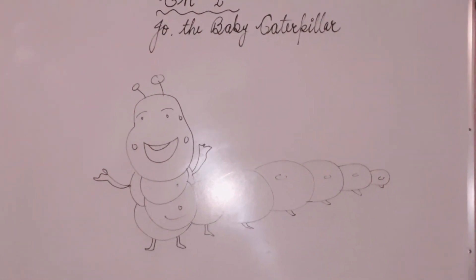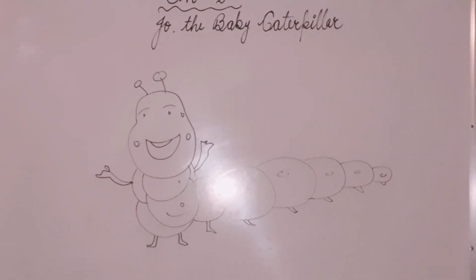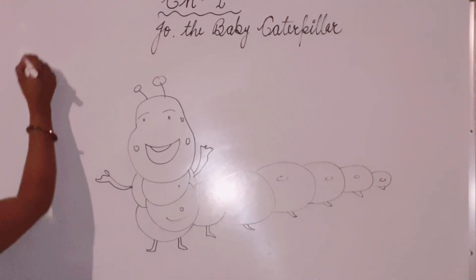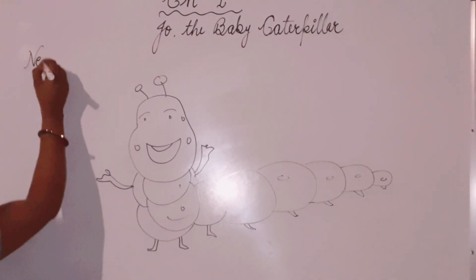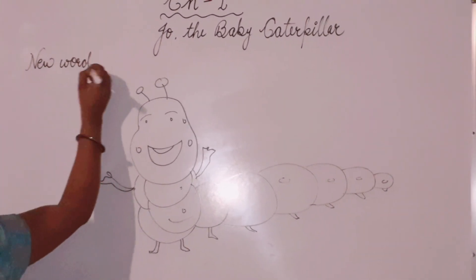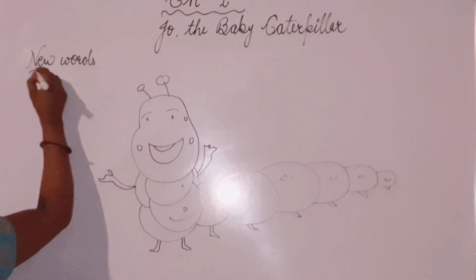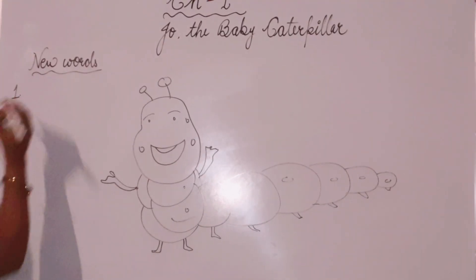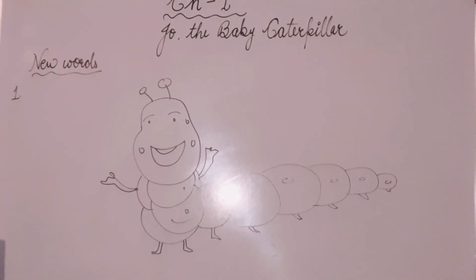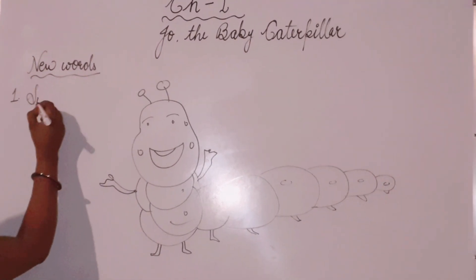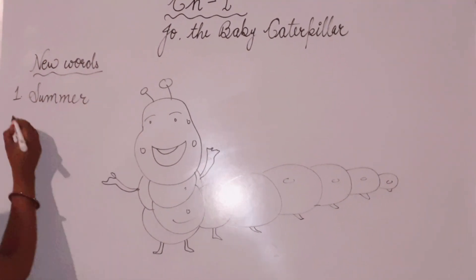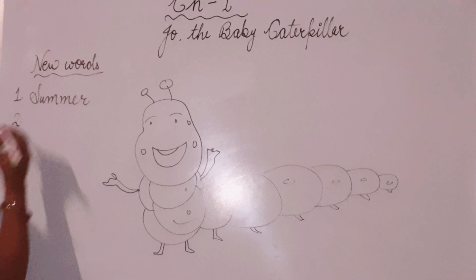Let's start with the new words of this chapter. The first new word is summer. Summer means garam mausam — the hot season.